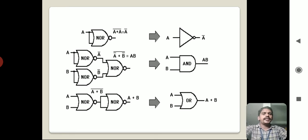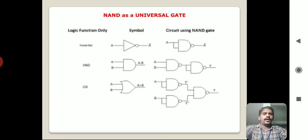In summary: NOR gate is converted into NOT gate, NOR gate is converted into AND gate, and NOR gate is converted into OR gate. In this way we convert NOR gate into three basic logic gates, hence it is named as the universality of the NOR gate.